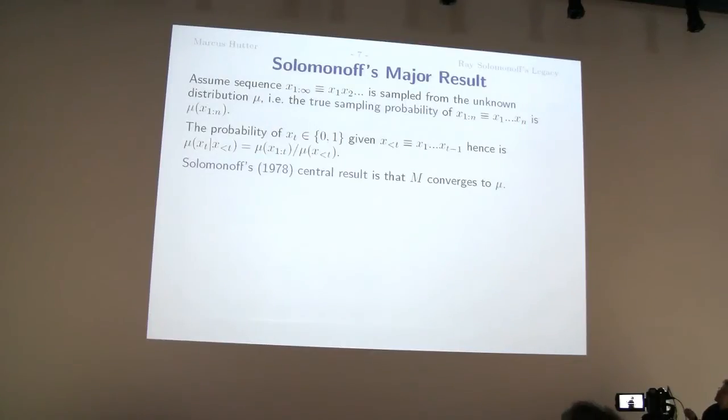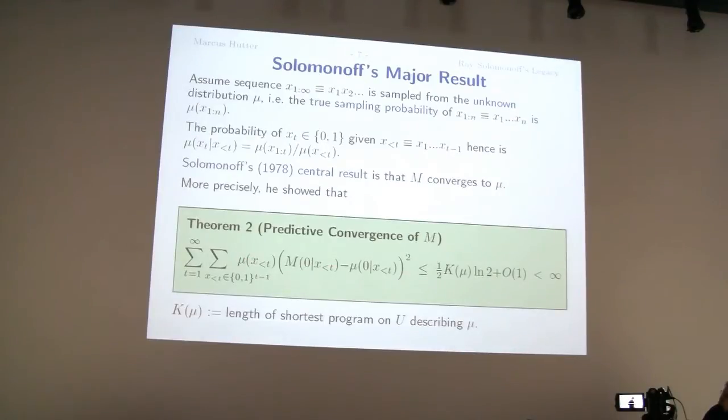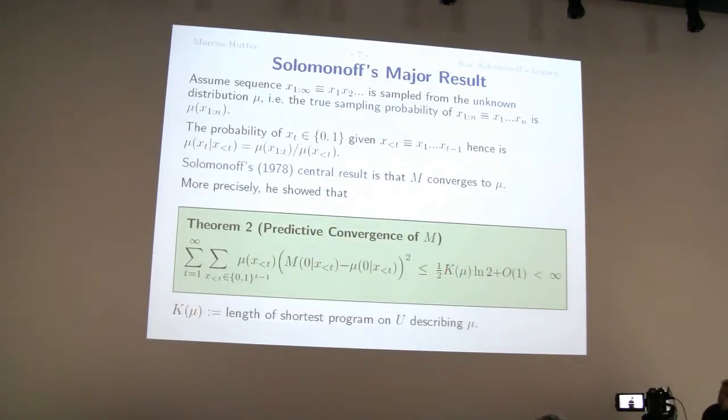So now here's Solomonoff's central result. Solomonoff's central result essentially says that m is a good substitute of mu. So m converges to mu in the following sense. So what we ideally would like to do, we would like to use mu for prediction. So what is the probability that the next bit is zero given that we have observed this? But we don't know mu. So let's replace that by Solomonoff's distribution and use m for prediction and compare this true distribution, predictive distribution with this universal distribution. Take the square loss, but actually you can take any other loss. And take the expectation. So you multiply with the probability of the past and sum over it. So that's the expected square difference. And then you sum over all time instances. And what Ray has shown is that this quantity is bounded by a finite constant. And this constant is proportional to the complexity of this environment mu. An important thing that's linear, not also exponential or something. And no big constant here. And this constant, you can argue that it doesn't matter.